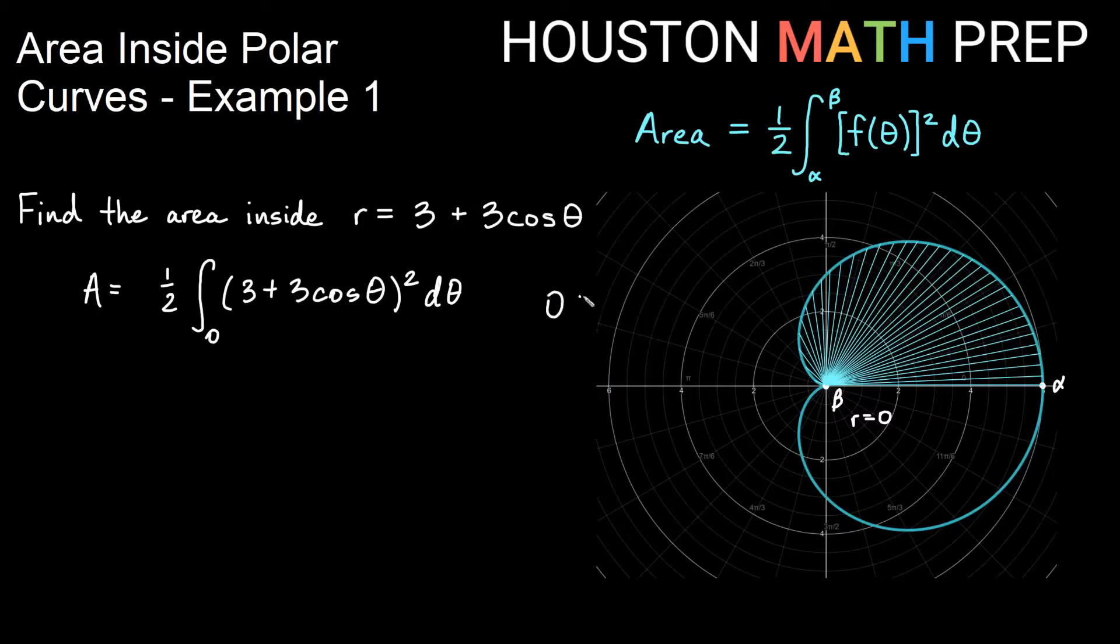So if I say zero is equal to 3 plus 3 cosine theta, and I solve this for theta. Let's go ahead and subtract 3. So we'll get negative 3 is equal to 3 cosine theta. We'll divide by threes. So we'll get negative 1 is equal to cosine of theta. And where does that happen the first time on the unit circle? Well, it happens at theta is pi.